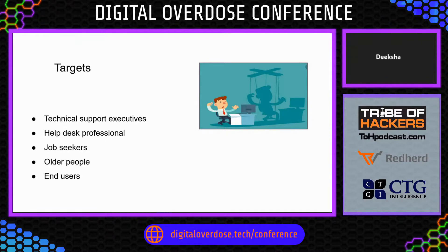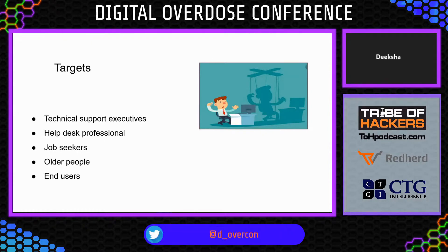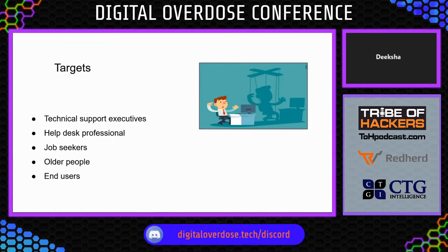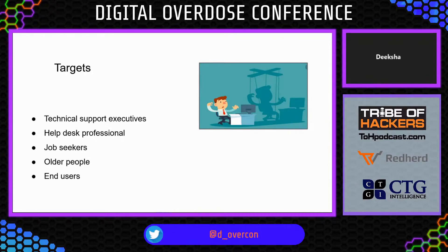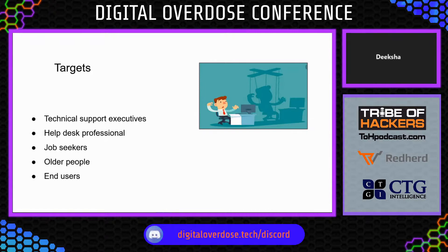Next common targets are job seekers. They upload their resumes on various job portals, and their primary information can be easily accessed by hackers. With this data, hackers could plan and execute their social engineering attack on them. After that comes older people who are not much familiar with technology, which makes them an easy target for attackers. Lastly, the success of a social engineering attack depends on the confidence of the attacker and the gullibility of the victim — so the next attack could be on anyone, basically end users.